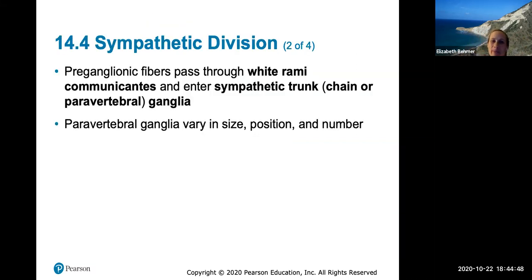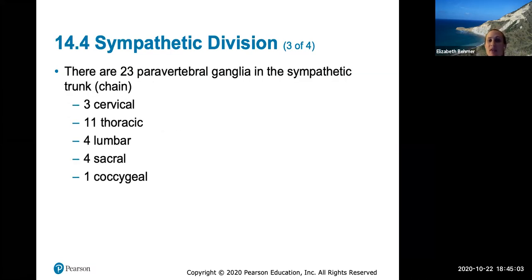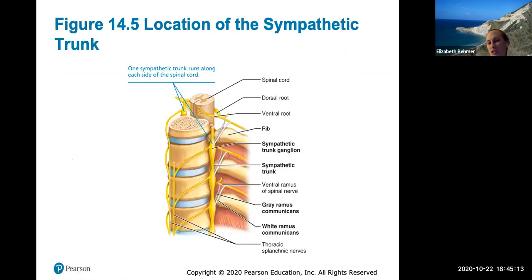The sympathetic trunk ganglia run on either side of the spinal cord in a ladder-like structure. Preganglionic fibers pass through white rami communicantes and enter the sympathetic trunk ganglia. There are 23 paravertebral ganglia in the sympathetic trunk, located along the spinal cord. This is the site of the synapse from the preganglionic neuron to the postganglionic neuron.